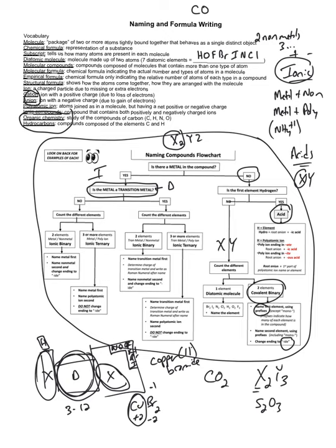Naming ionic compounds: if it's a binary compound with just two elements, the last element always ends in '-ide.' So if it's a binary ionic compound, the second element always ends in '-ide,' just like covalent compounds. If it contains a polyatomic ion, you just have to know what the name of that polyatomic ion is.